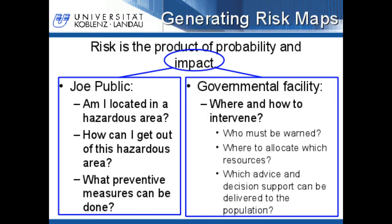When generating risk maps we have to consider the following. Risk is the product of probability and impact. The impact differs for different user groups. Joe Public wants to know: am I located in a hazardous area? How can I get out of this hazardous area? And what preventive measures can be done? A governmental facility wants to know where and how to intervene, who must be warned, where to allocate which resources, and which advice and decision support can be delivered to the population.